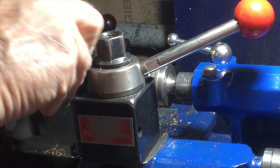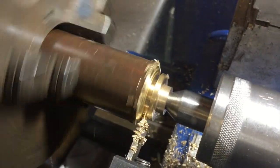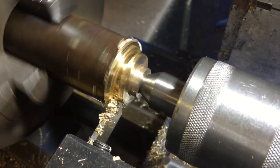Once I'm satisfied it's running freely, I part the piece off with a parting tool. Since it's bronze, it's reasonably easy to part off.